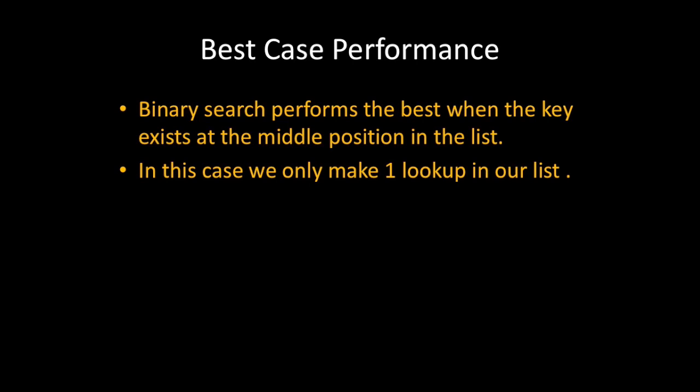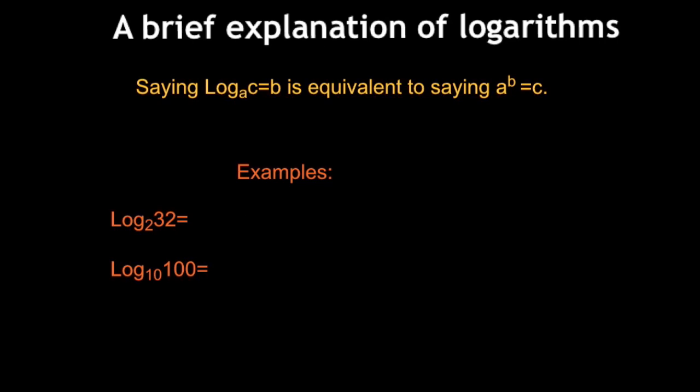Binary search performs best when the key exists at the middle position in the list, because the very first thing we do in that while loop is check the value at the middle position. And if it's equal to our key, we stop iterating. So in this case, we only make one lookup in our list. And that means that it's going to be O of one runtime in the best case.